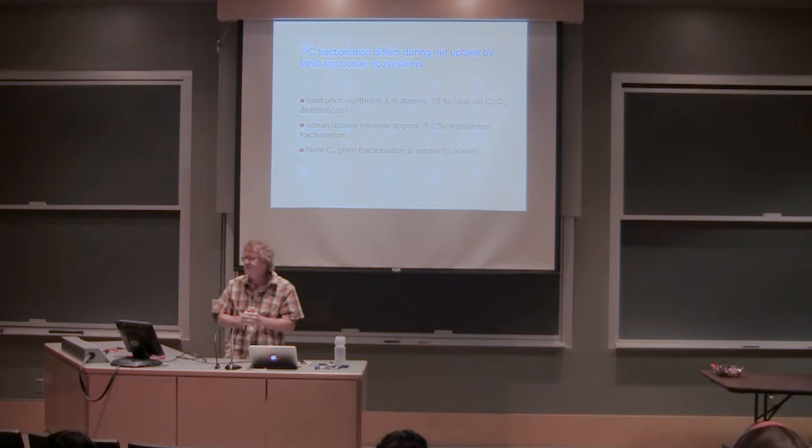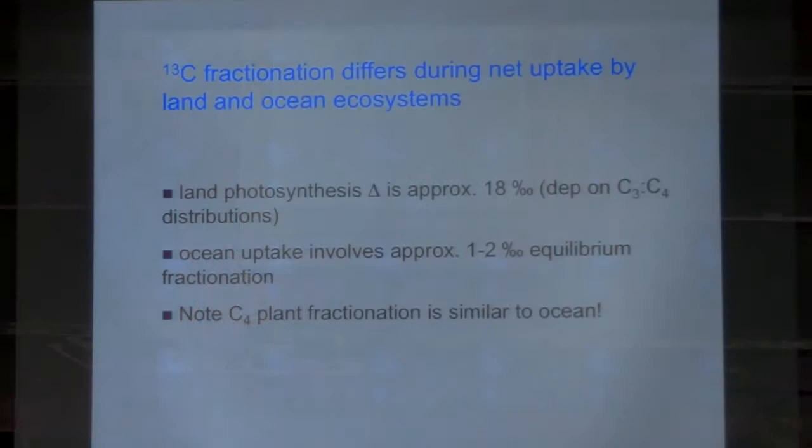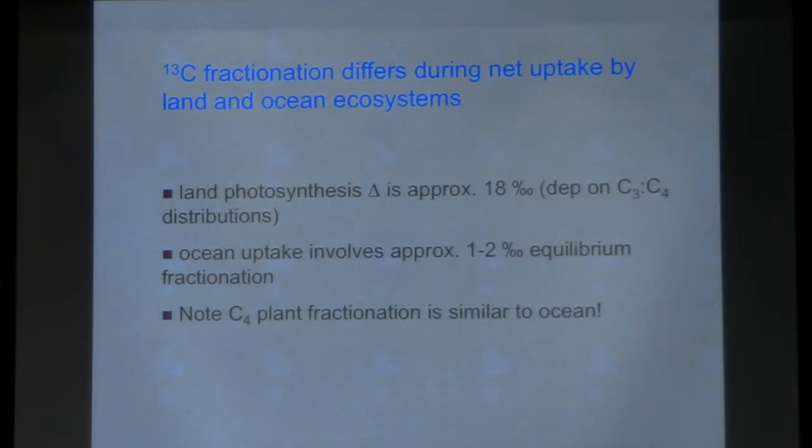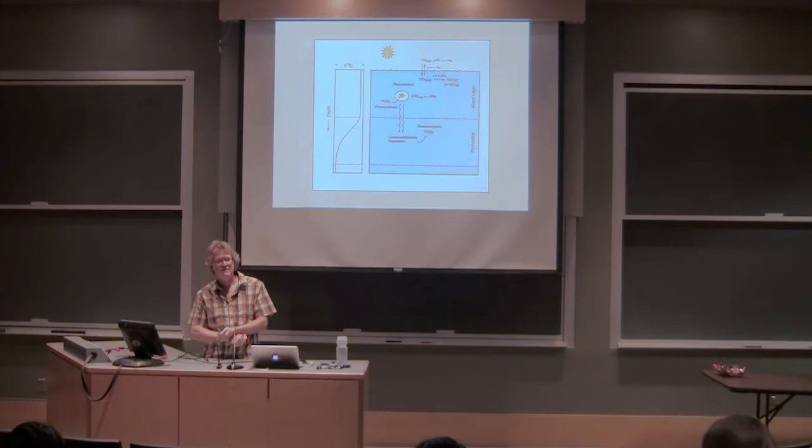The fractionation of C3 ecosystems on average is around 18 per mil. C4 ecosystems are much smaller, as you know from Jim. The ocean-atmosphere exchange has a net signature of approximately 1 to 2—that's the equilibrium fractionation. An important point is that C4 fractionation and ocean fractionation, when each of those reservoirs is exchanging with the atmosphere, are similar. So C13 alone has challenges when sorting out ocean versus C4 exchange. This is a slide Howie is probably still showing—did you see this on Saturday? Maybe a nicer version of it.